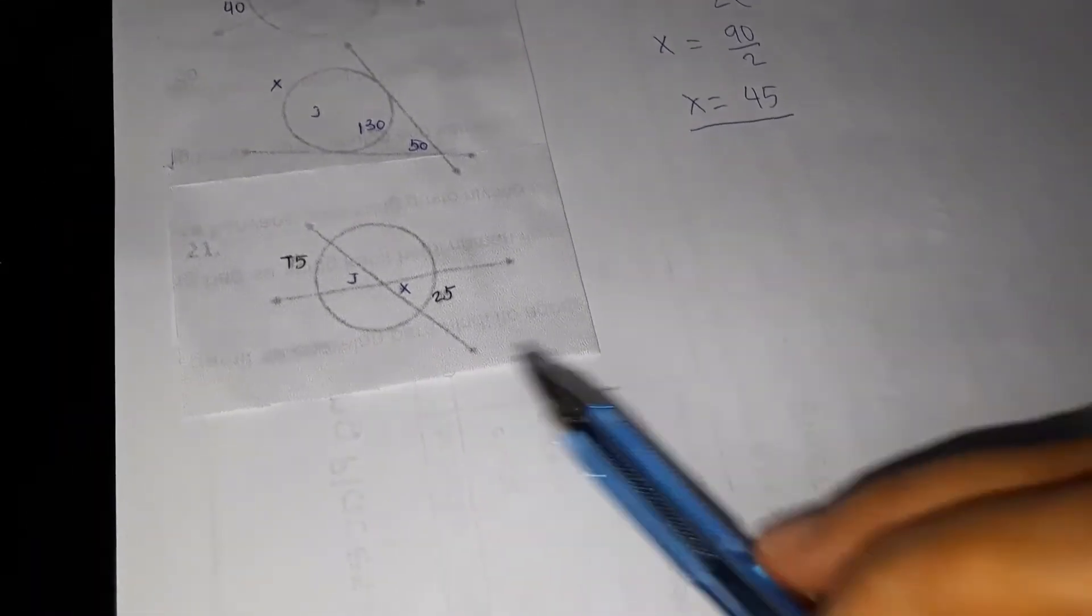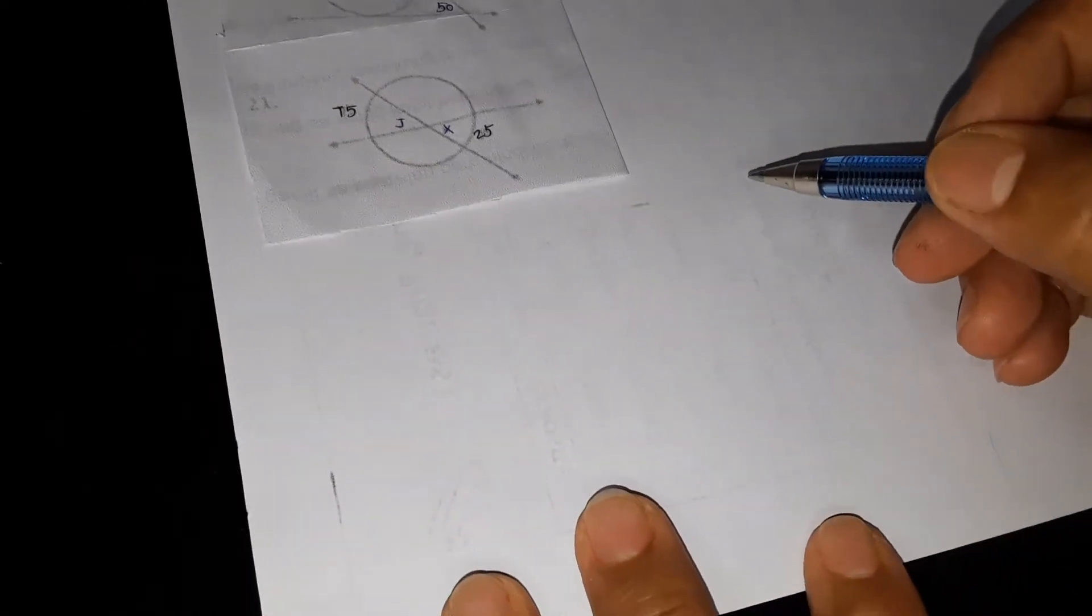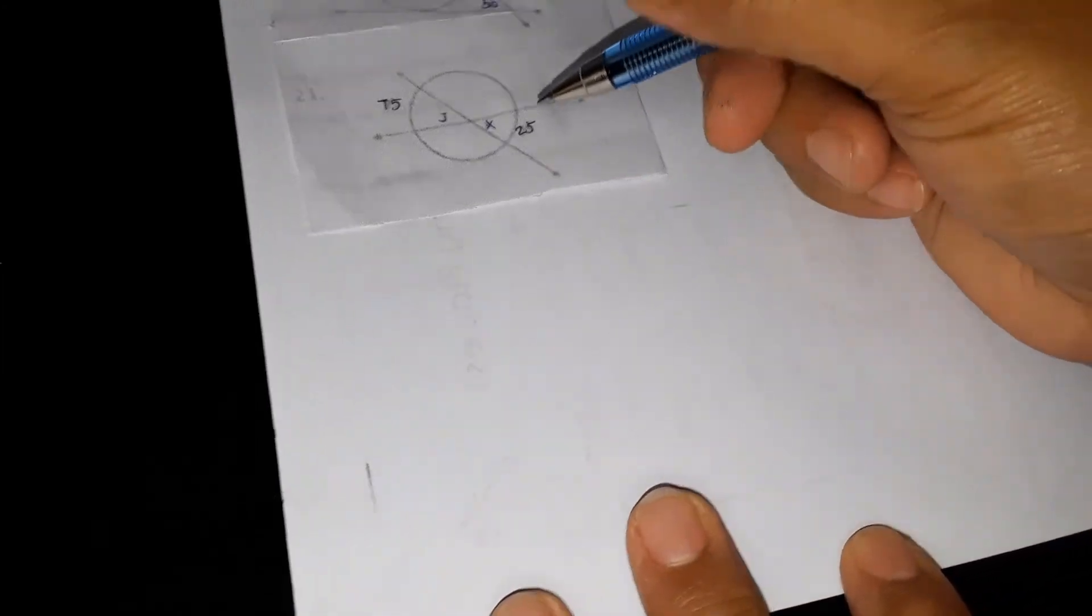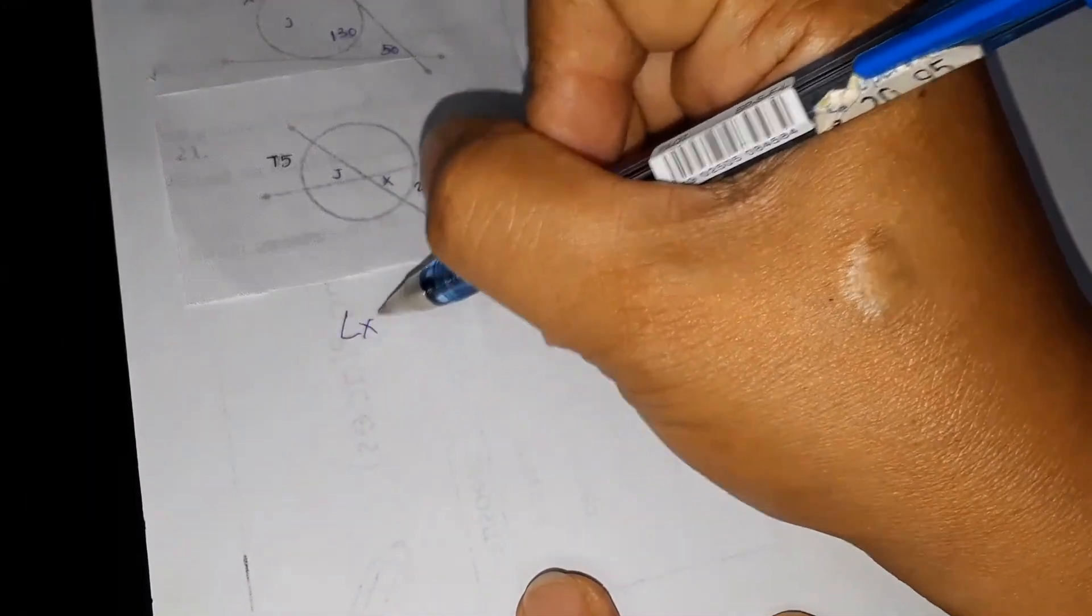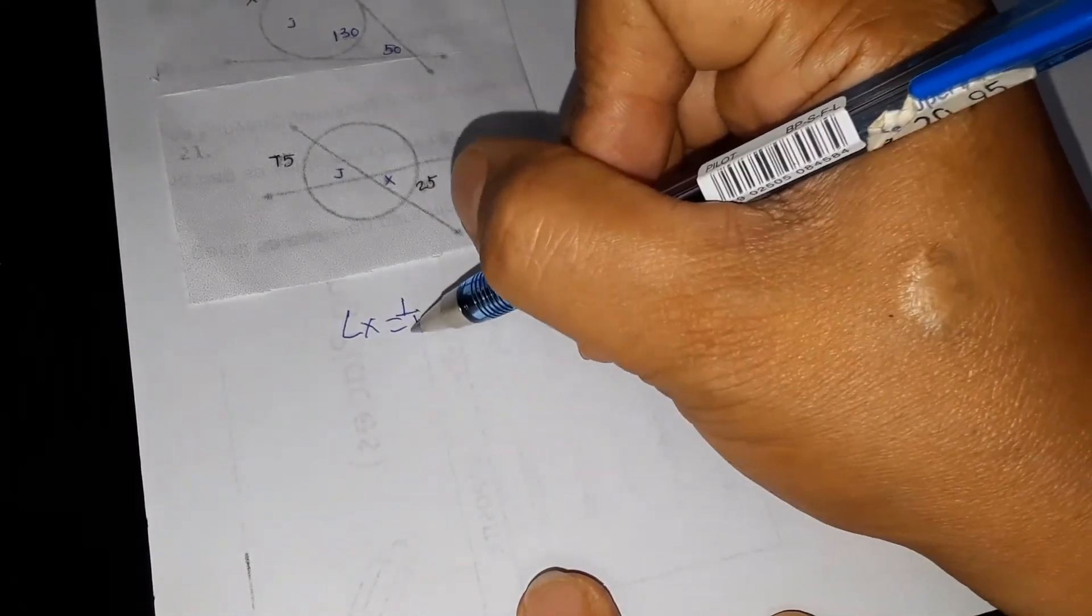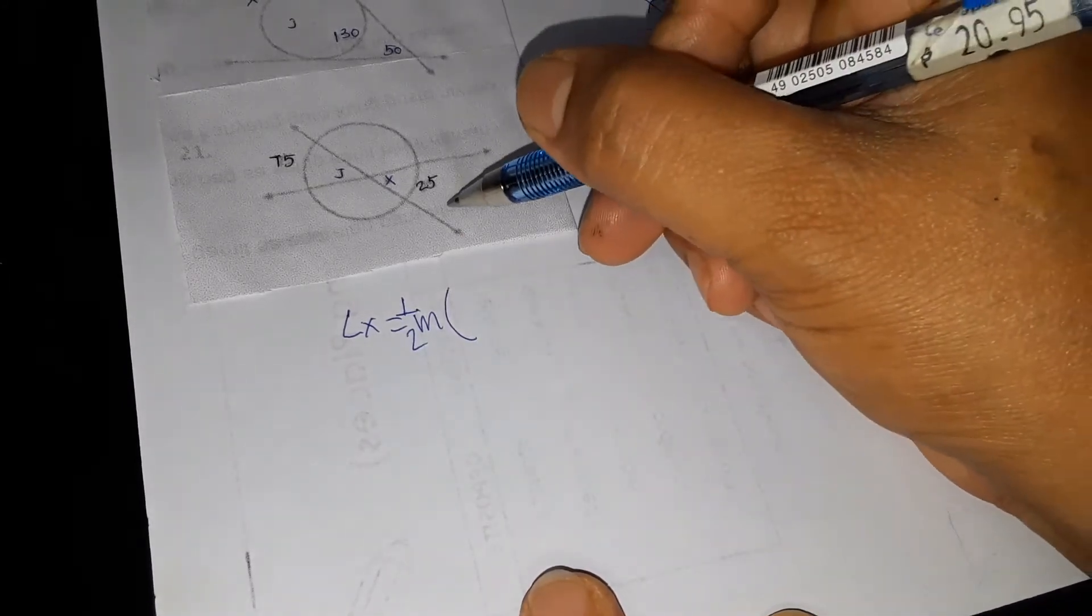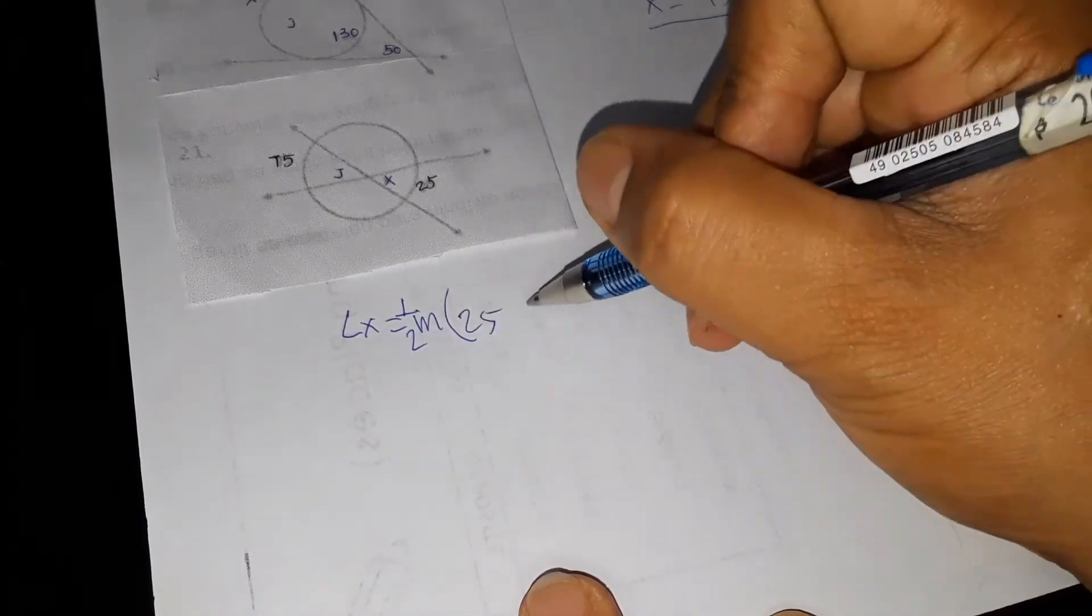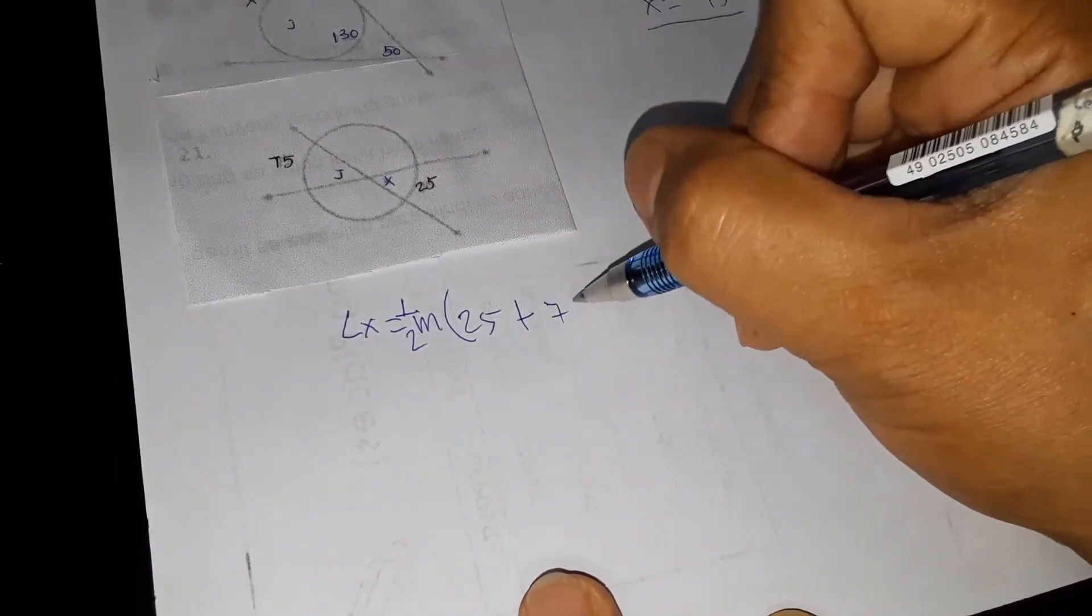So the same with our example number 3. The equation is the same. So let's start. We have angle X is equal to the measurement, or one half the measurement, I should say.